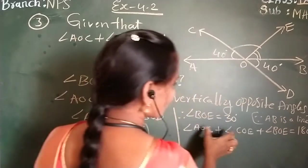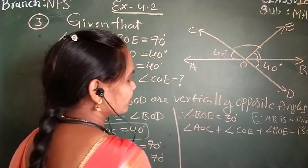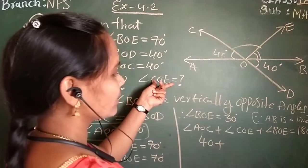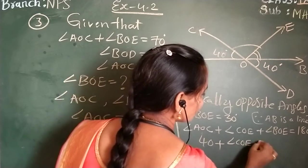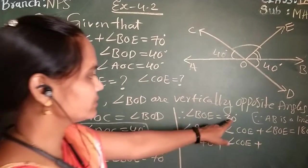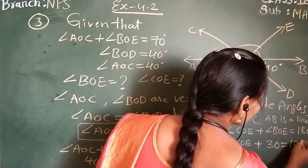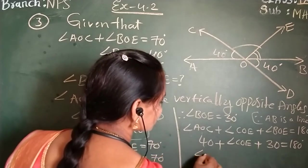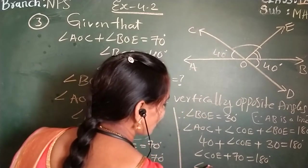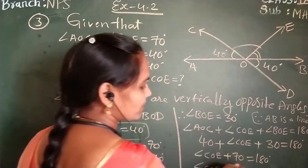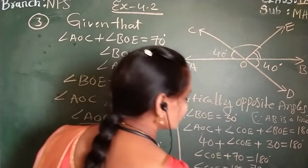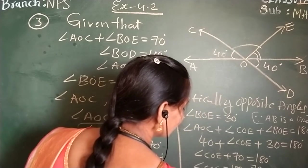Why we are writing the sum of all angles? Because AB is a straight line. Now, AOC already you know is 40 degrees. Angle COE only we need to find out. Plus angle BOE, angle BOE already we got as 30 degrees. So, 40 plus angle COE plus 30 equals 180. Now, angle COE equals 180 minus 70. Therefore, angle COE is 110 degrees.